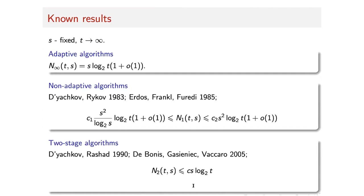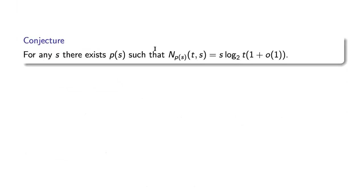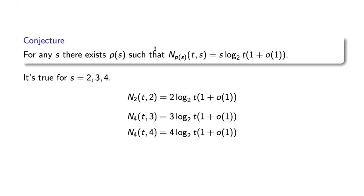The question I want to ask: can we achieve the same number of tests as in the adaptive case, using only a small number of stages? Not necessarily two stages, maybe three or four, but some small number. There is a conjecture that for any fixed number S, there exists a number of stages P(S) such that the number of tests is equivalent to S times the binary logarithm of T — roughly the same as in the fully adaptive case. This conjecture is true for S equals 2, 3, and 4. For two coins we need two stages, and for three and four coins we need four stages. It is unknown whether it is true for S greater than four.